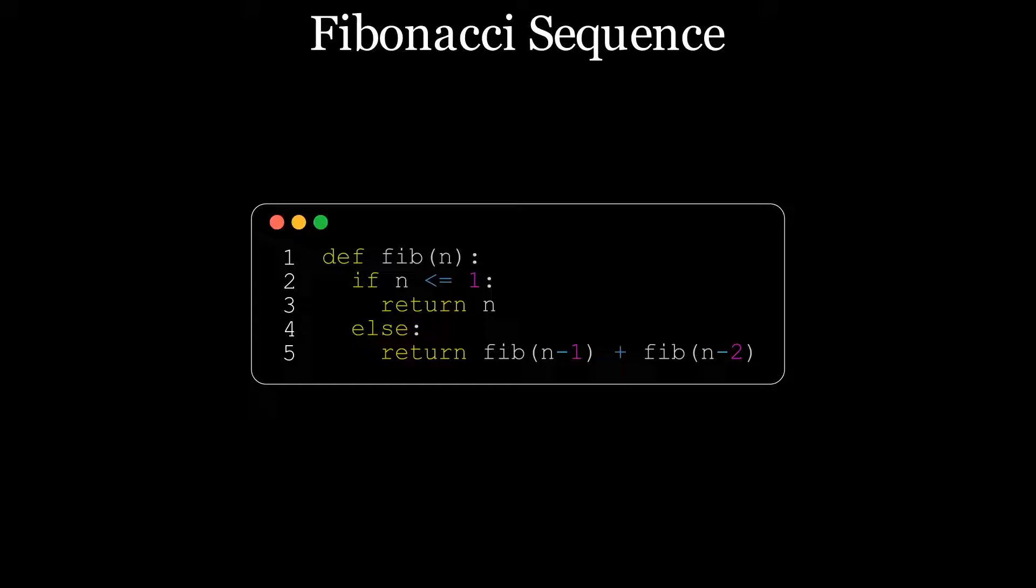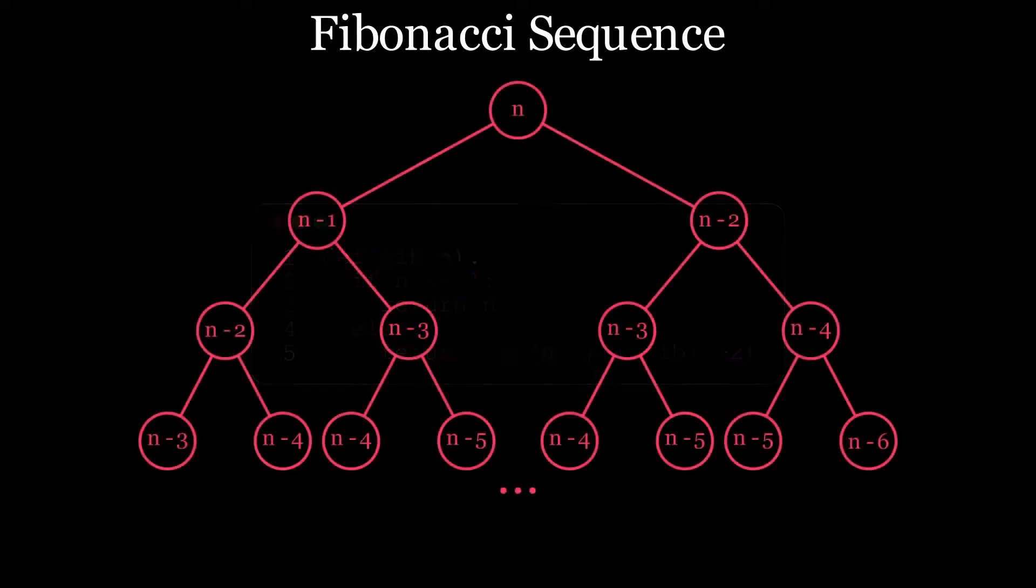But this function has a significant performance problem. To see this, let's first visualize the function calls as a tree. Starting from the root of the tree at n, the left path is the previous value and the right the value before it. Each side of the tree will grow until we reach leaf nodes at one of those base cases of 0 or 1.